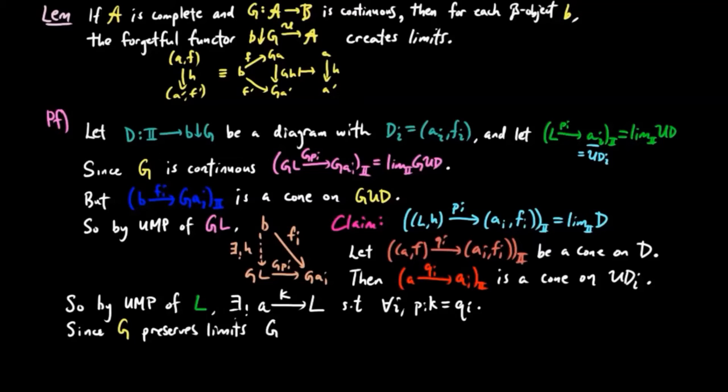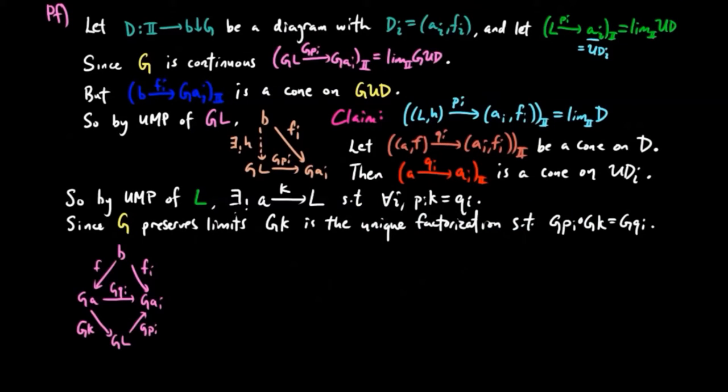Then since G preserves limits, GK is the unique factorization, such that GPI GK is equal to GQI for each I. Then the following diagram commutes. We have left to show that GK is a B over G morphism.